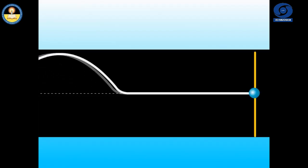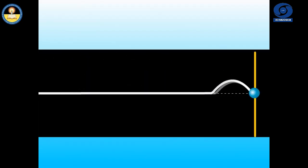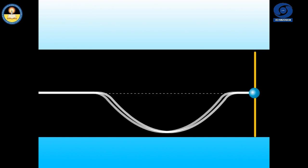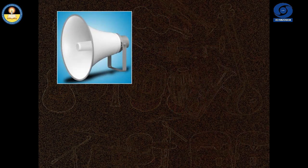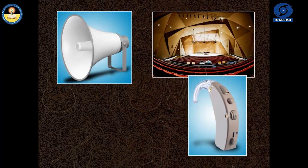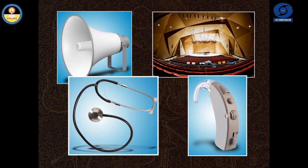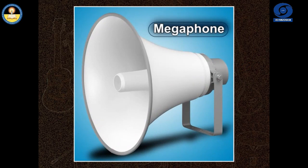The phenomenon of reflection of sound is used in many devices like megaphones, sound boards, hearing aids and stethoscopes. Megaphone is a horn-shaped tube. The sound waves are prevented from spreading out by successive reflections and are confined to the air within the tube.